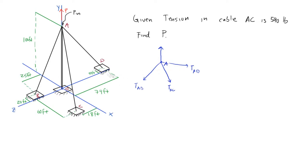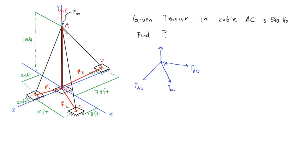To get started, we have to define position vectors to find unit vectors, then find tension vectors and solve a system of linear equations. We define position vector R1 going from O to B, then R2, R3 — all lying on the X-Z plane — and finally R4 going all the way up to A from O.